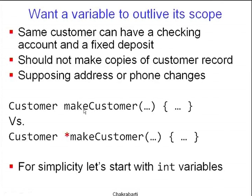What we'd like to store in the account database is a pointer to a customer record. From the fixed deposit table, checking account table, savings account table, mutual fund table — if it's the same customer, it's the same pointer, and we get to only one copy of the customer record. So if we write a function called make_customer, we might want to return a customer star — a customer pointer — rather than a customer by value.